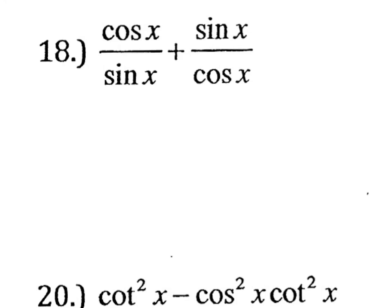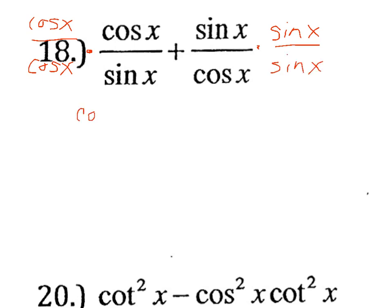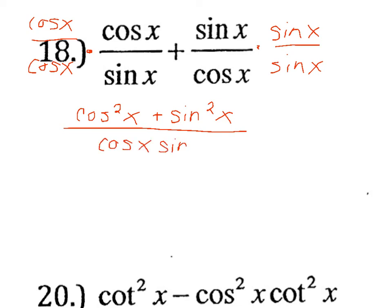For problem 18, we want to add two fractions together, which requires common denominators. Multiplying the first by cosine x over cosine x and the second by sine x over sine x gives cosine squared x plus sine squared x all over cosine x times sine x. By our Pythagorean identity, the numerator equals 1, so we have 1 over cosine x sine x, which we can write as secant x times cosecant x.